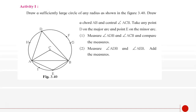Now you have to draw a sufficiently large circle of any radius as shown in figure 3.40. Draw a chord AB and central angle ACB. Take any point D on the major arc and point E on the minor arc.